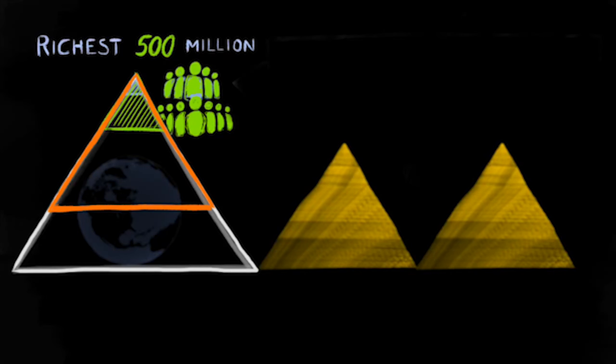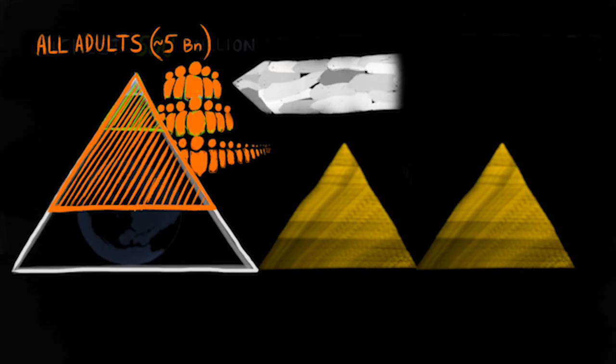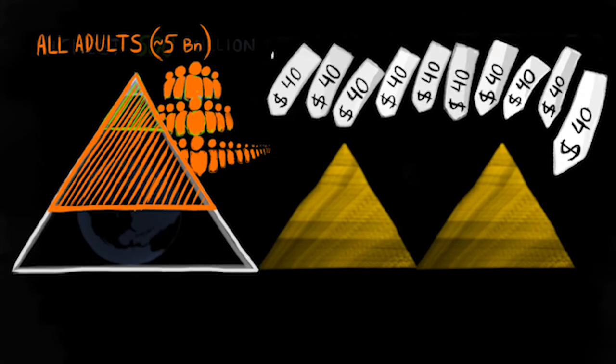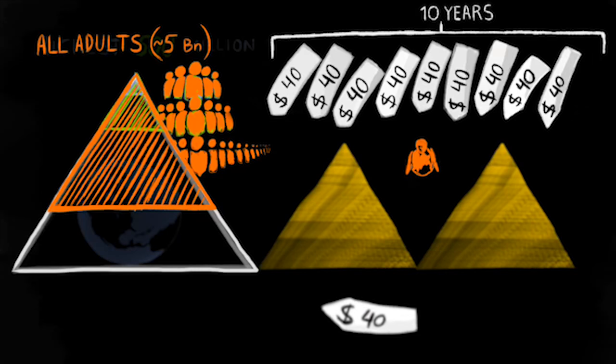Finally, if we were to divide two trillion dollars amongst all adults living on this planet, each and everyone would need to invest 400 dollars, or 40 dollars per year during 10 years. The problem is that half the world's population are very poor and do not have this money to spare.